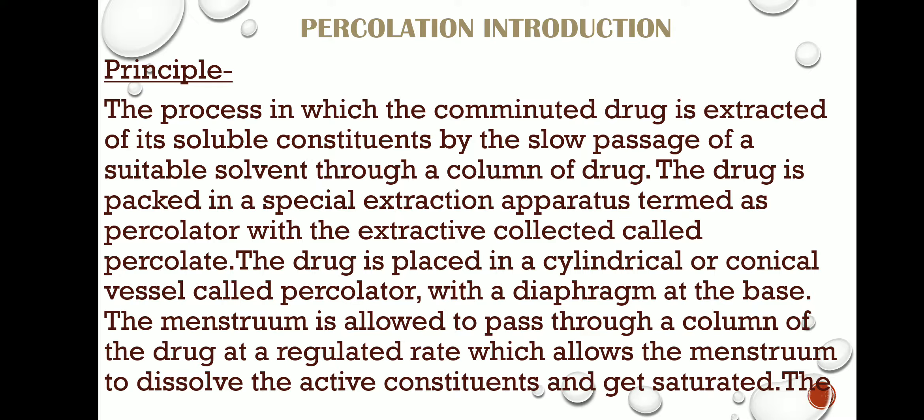The drug is placed in a cylindrical or conical vessel called a percolator, which has a diaphragm at the base. The percolator is generally cylindrical or conical — mostly conical is used. The menstruum is allowed to pass through a column of the drug at a regulated rate.